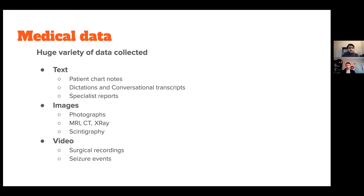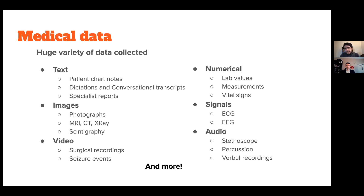There is a huge variety of data collected in medicine. Major types include text, images, and videos — chart notes, X-rays, surgical recordings, seizure events. There are also numerical values from labs and vital signs, signals like ECG for the heart and EEG for the brain, and audio signals from listening to the heart with a stethoscope. AI could come in handy in putting all of these together to better the healthcare system.